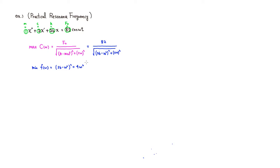Let's do a little calculus. To find the ω that minimizes this function, I'll look for critical numbers. f prime of ω equals: put 2 in front, keep the inside function, subtract 1 from the power, and multiply by the derivative of the inside, which is negative 2ω, plus the derivative of 4ω², which is 8ω.